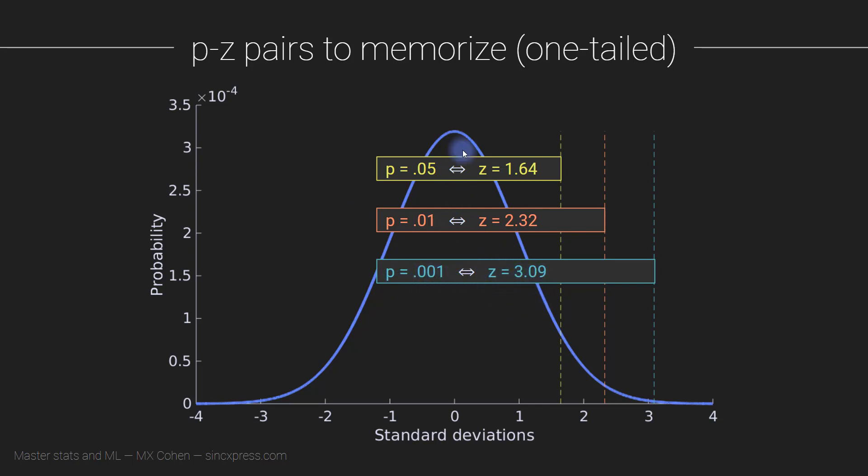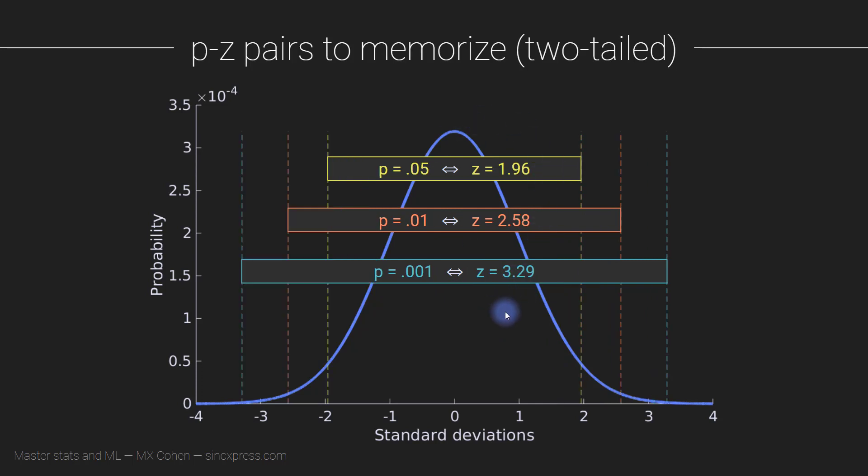These are the one-tailed z-values. Here we get the two-tailed z-values, and remember from the previous lecture, in general you always want to do two-tailed tests unless you have a really good compelling reason to do a one-tailed test. So p equals 0.05 corresponds to a z-value of 1.96. Now these z-values are actually larger than the previous slide because these are two-tailed. This means I probably should have written this plus minus 1.96, because this corresponds to plus 1.96 on the right, minus 1.96 over here.